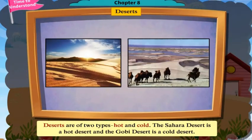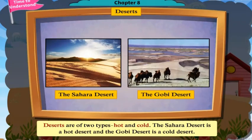Deserts are of two types: hot and cold. The Sahara Desert is a hot desert, and the Gobi Desert is a cold desert.